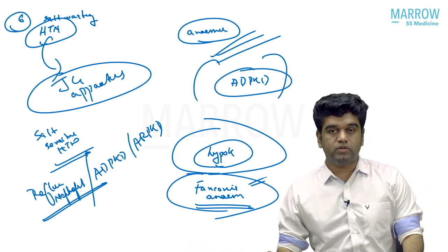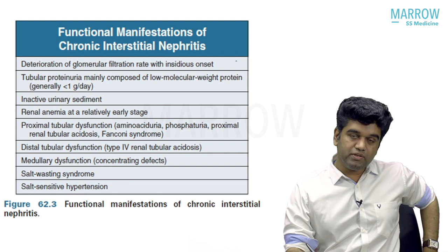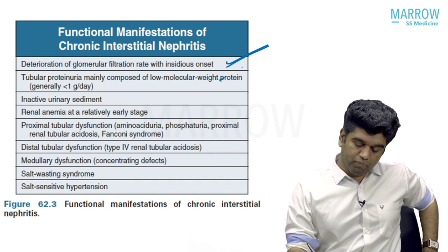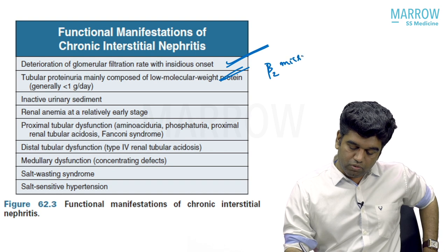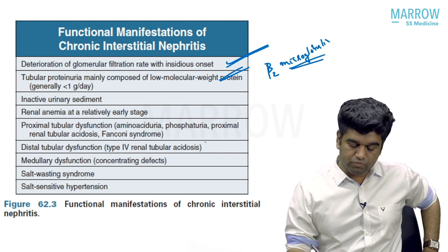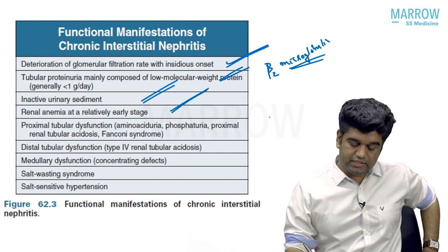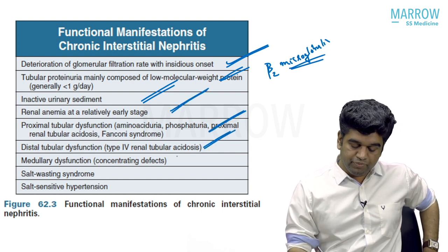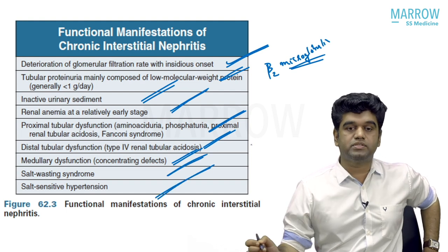The complete clinical picture of CTID: insidious onset with slowly declining GFR, tubular proteinuria (use beta-2 microglobulin, not albumin, which is for glomerular disease), inactive urine sediment, early anemia, proximal or distal tubular dysfunction, urinary concentrating defect, salt wasting syndrome, and rarely salt-sensitive hypertension.